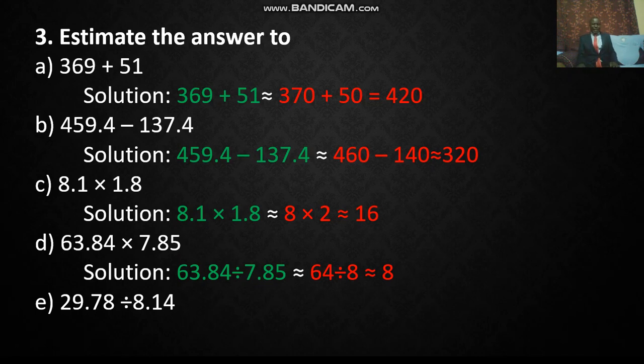Then you have 29.78 becomes 30 divided by 8.14. Estimated will be 8. So you get, that is when you divide, you get 15 divided by 4. You get 3.75, which adjusts to 4.